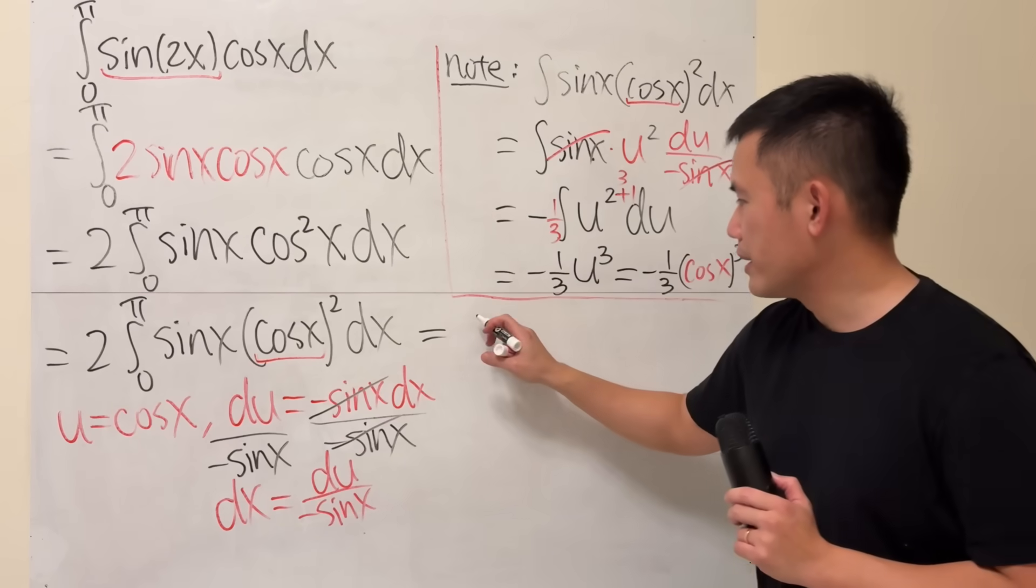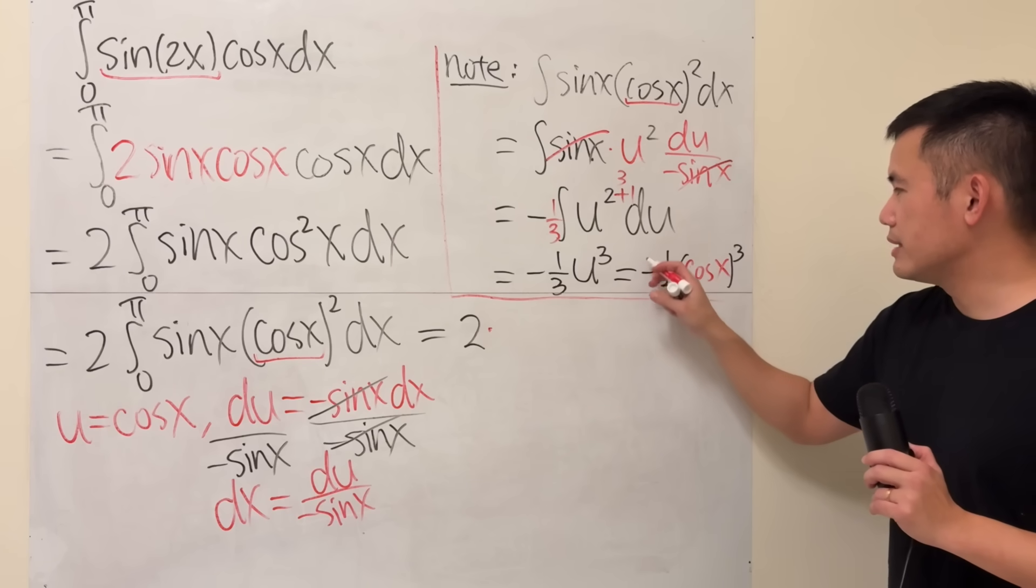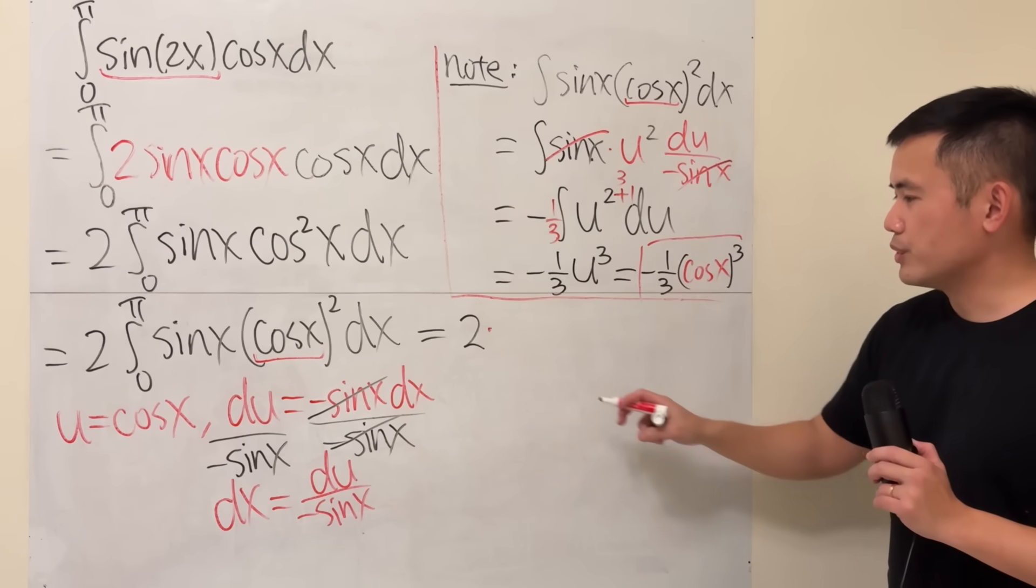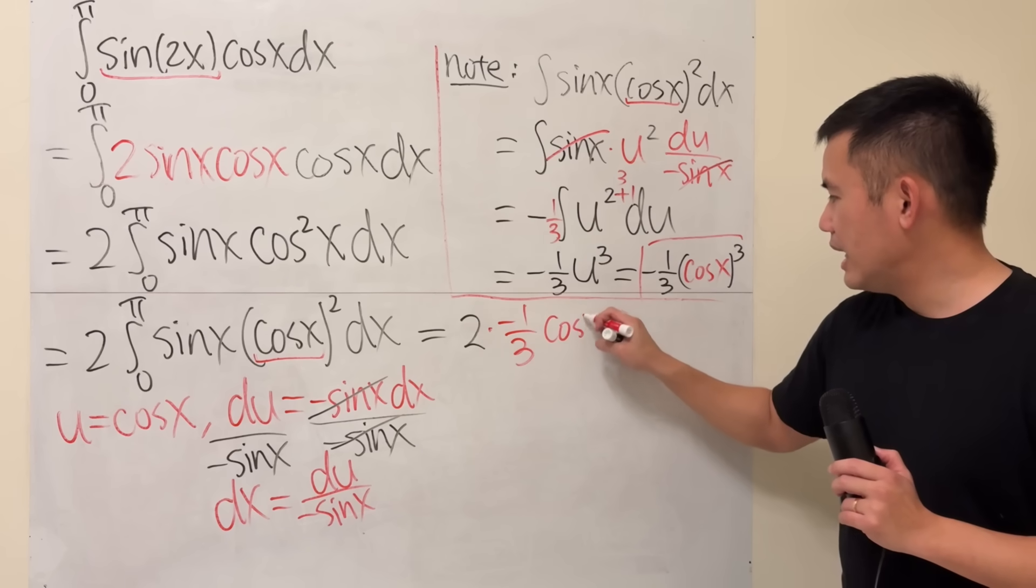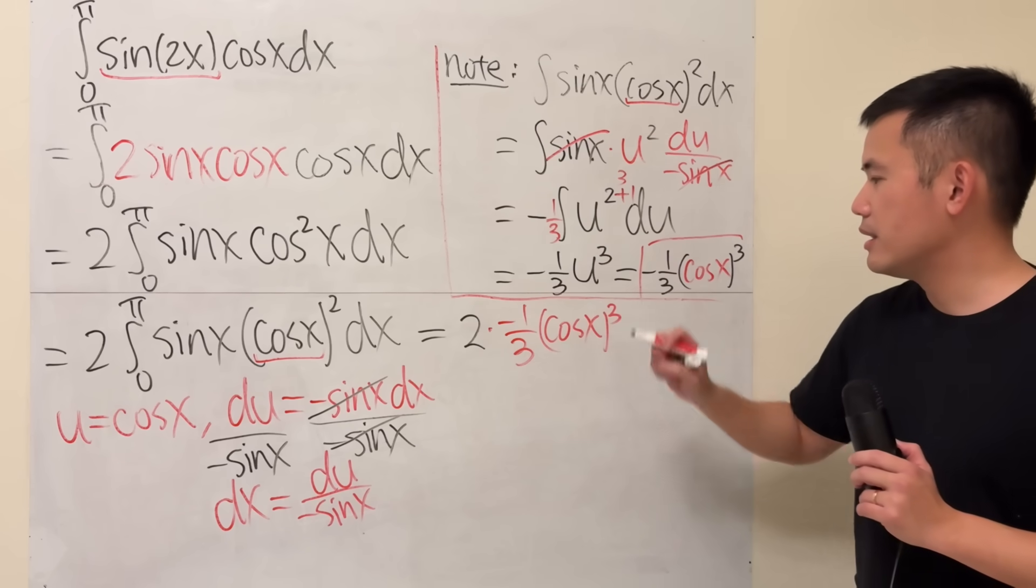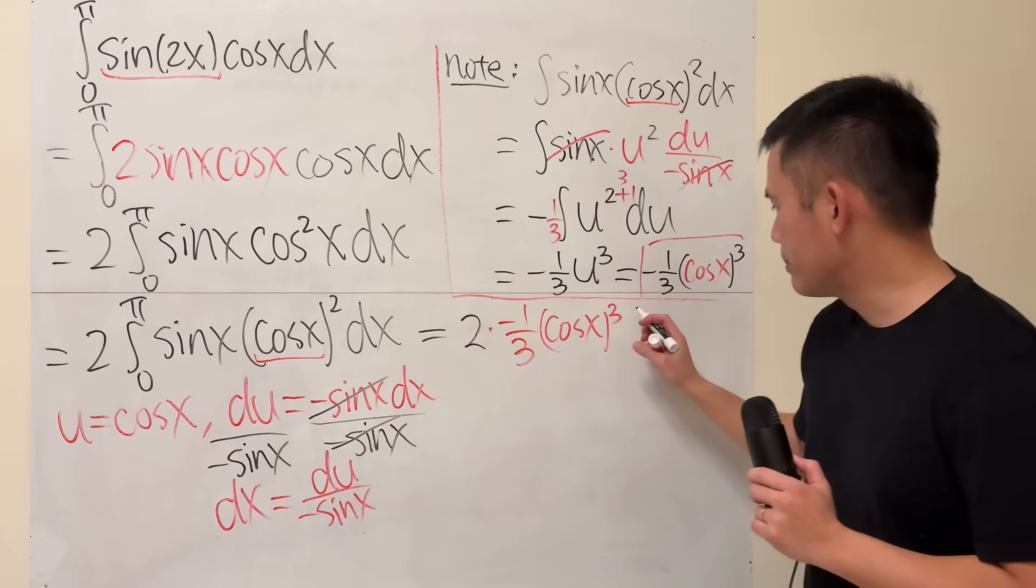Here we have this 2 right here, and then we multiply by this result, right? This result that we got earlier, which is negative 1 third, cosine x to the third power. And then we are going to plug in 0 and pi like this.